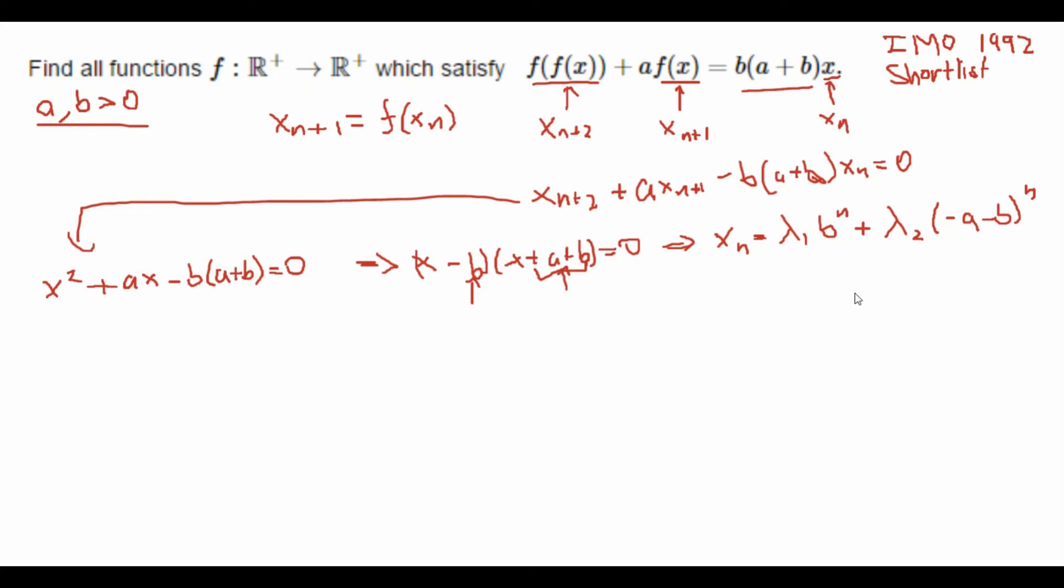Okay, well now we have a general form. Now note that x_n, this thing, is always positive. Remember our function is from positive reals to positive reals.